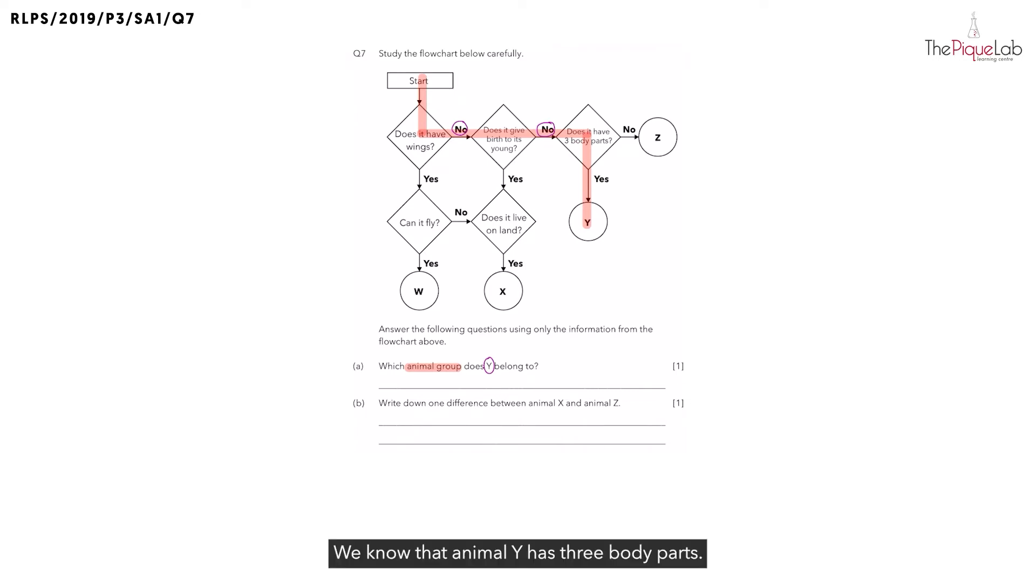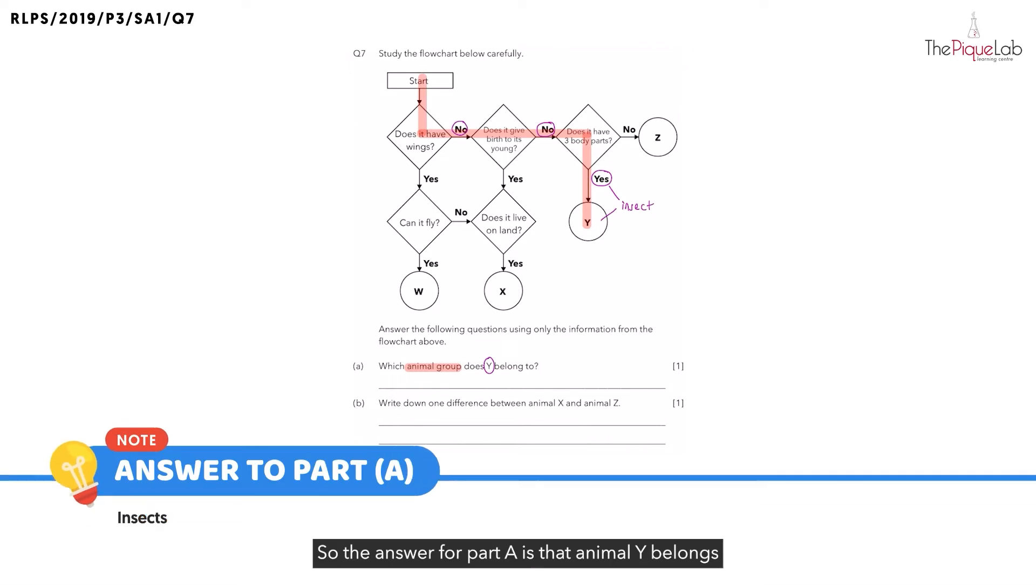So now let's take a look at the last characteristic. We know that animal Y has three body parts. Is this a unique characteristic? Yes. But which is the only animal group that has three body parts? Very good, it is the insect animal group. So the answer for part A is that animal Y belongs to the insect animal group.